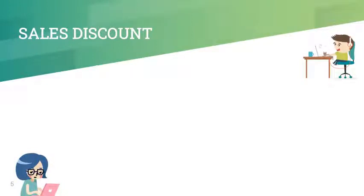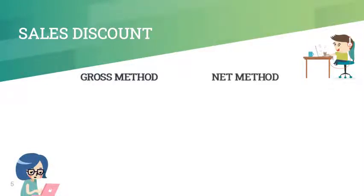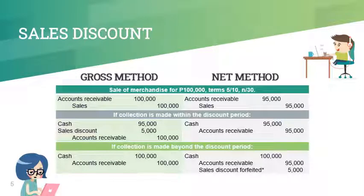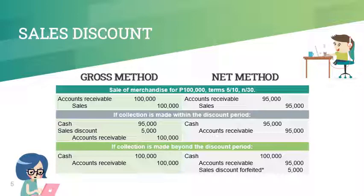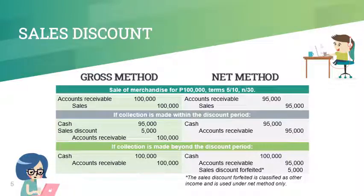The sales discount can be accounted for using either the gross method or net method. Here is a sample illustration. Observe that when collection is made within the discount period, the net sales under both methods will be the same at 95,000 pesos. When collection is made beyond the discount period, sales under the gross method will be 100,000 pesos, while sales under the net method will be 95,000 pesos. Take note that the sales discount for forfeited accounts is used under the net method only.